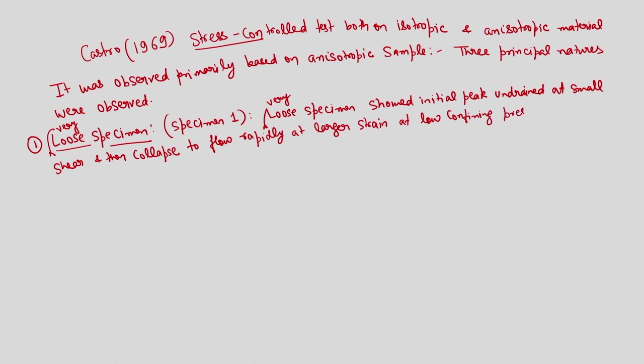The confining pressure had reduced to a very low value, and at the same time there has been an initiation of flow liquefaction, so the material is undergoing continuous movement. Such specimens correspond to very loose material — more specifically cohesionless soil. These samples were identified as those corresponding to very loose specimens, which can be classified by relative density. These samples initially showed peak undrained strength at very low axial strain, followed by loss of confinement, and that continued to a very large value of axial strain.